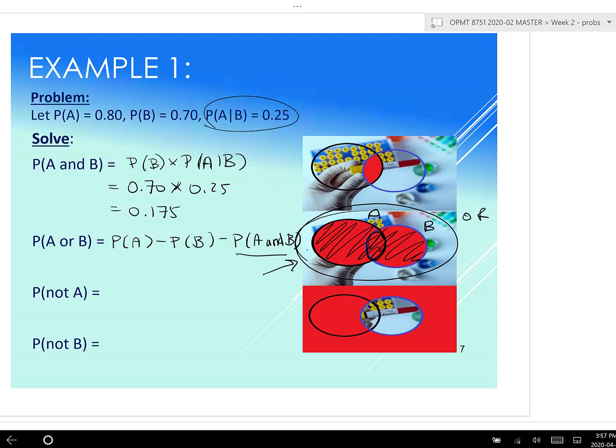So we have to subtract one of those middle areas to not double count that overlap. So that's why we subtract the and here, because otherwise we would be double counting this middle area. Remember, this and is this middle area right in here. So we need to subtract it once to not double count it.